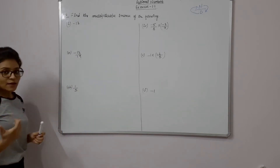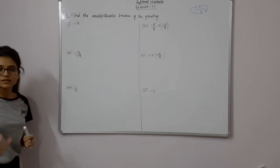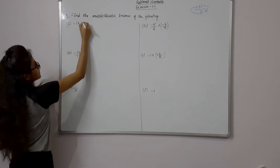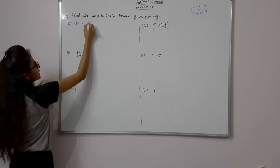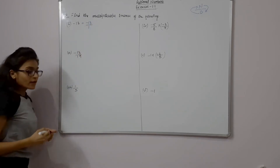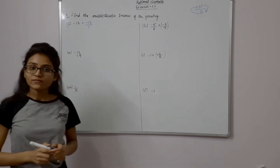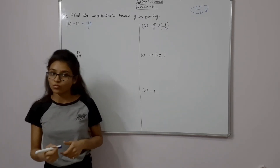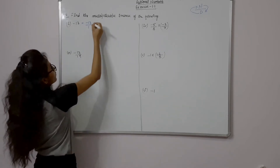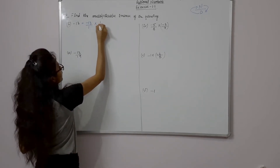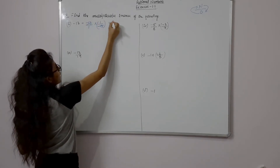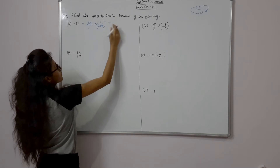Now let us take an example. First is minus 13. We write minus 13 as minus 13 upon 1. Its multiplicative inverse — what will be its reciprocal? It will be 1 upon minus 13.